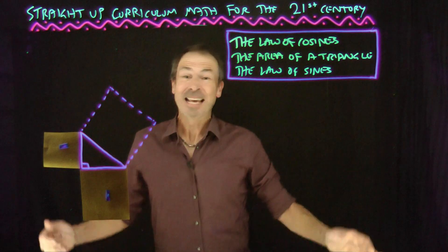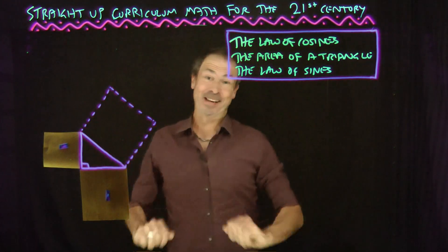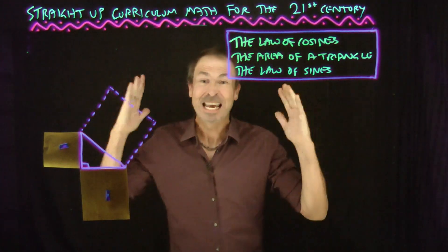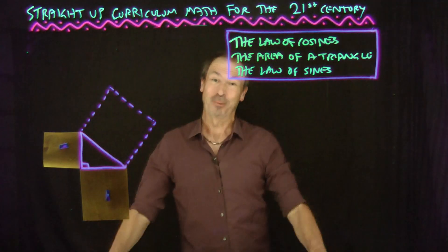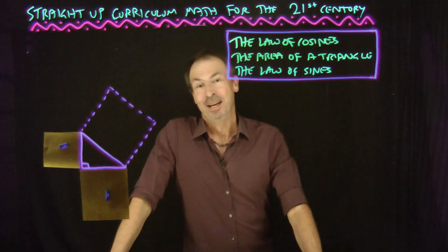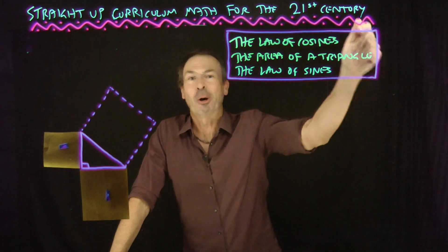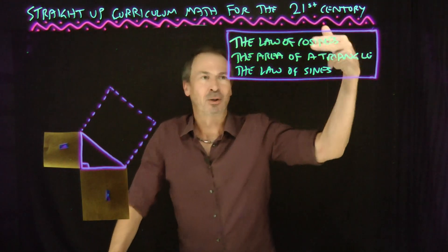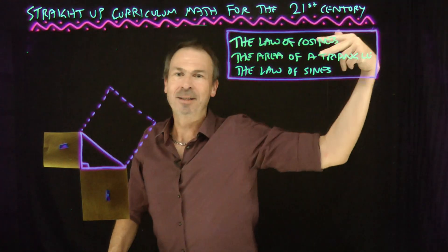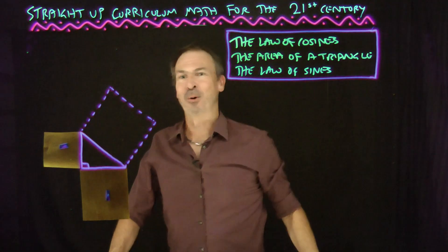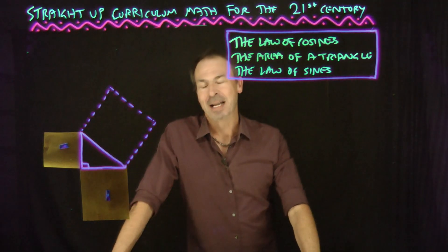G'day, it's James again with yet another video on the fabulous story of trigonometry. This time I want to talk about a little trio of ideas: the law of cosines, working out the area of a triangle, and something called the law of sines.